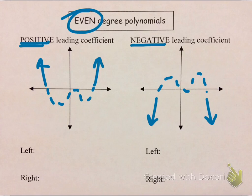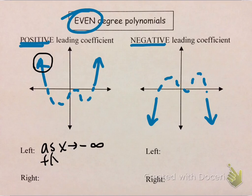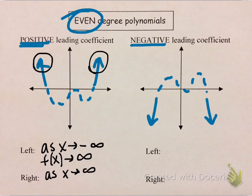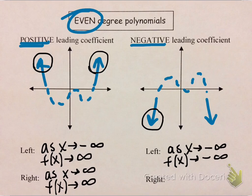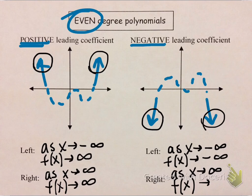Written with arrow notation: for a positive leading coefficient, the left behavior — as x approaches negative infinity, the graph points up, so f of x approaches positive infinity. The right behavior — as x approaches positive infinity, f of x also approaches positive infinity. For a negative leading coefficient: as x approaches negative infinity, the graph points down, so f of x approaches negative infinity. And as x approaches positive infinity, the graph is also going down, so f of x approaches negative infinity as well.